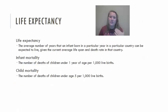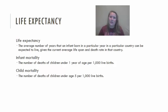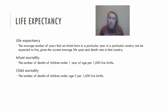I want to briefly connect this to overall life expectancy — how long on average someone is expected to live. Life expectancy is driven by quality of life in a particular location, and you have to account for infant mortality and child mortality. On the AP exam you need to know the difference: infant mortality means the child died before reaching one year of age, while child mortality means they died before reaching age five.